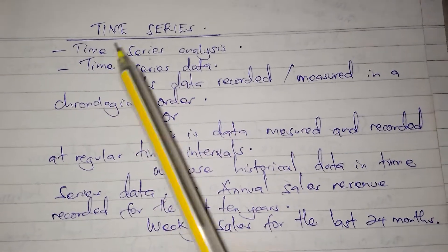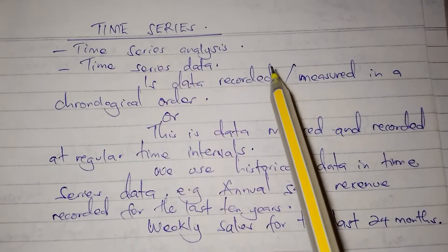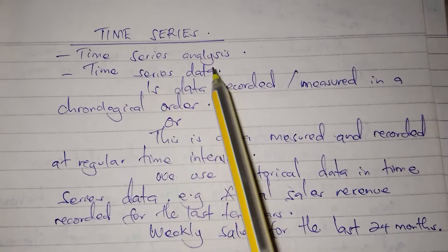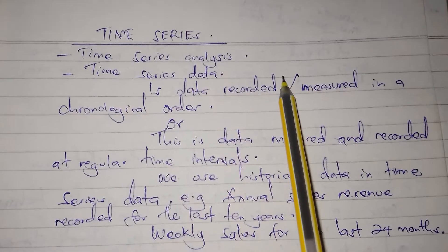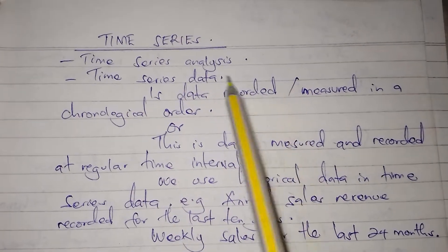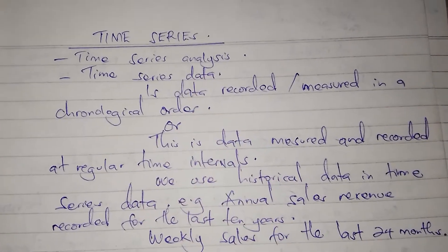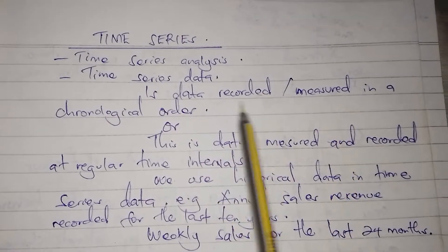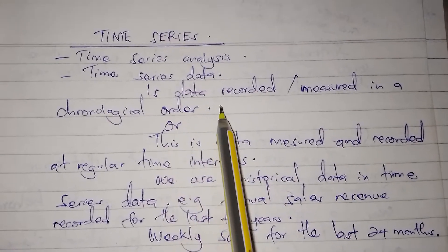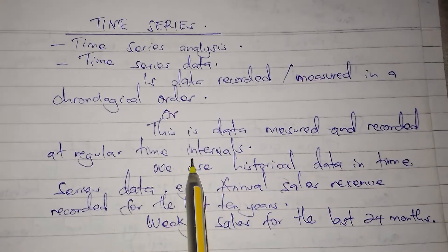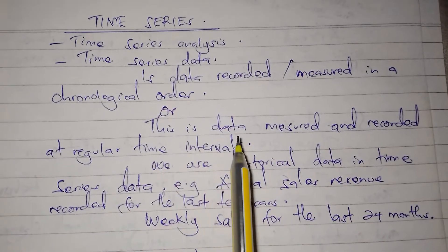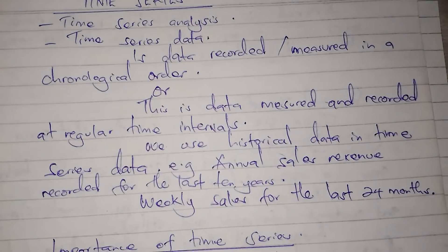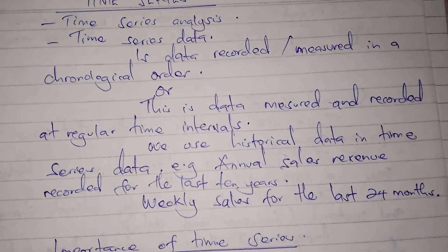In time series, the independent variable is going to be time, and it is the dependent variable that will be changing. Everything else depends on time. Time series data refers to data recorded or measured in a chronological order — data that is measured and recorded at a regular time interval, such as annually or every week.